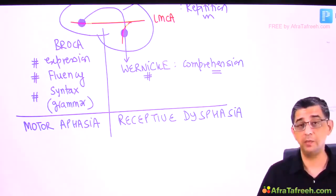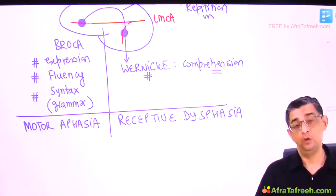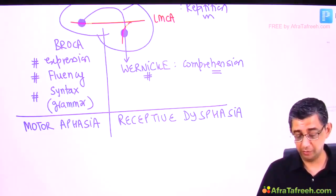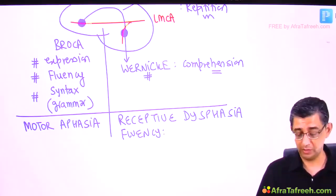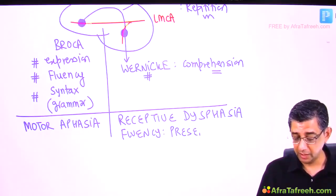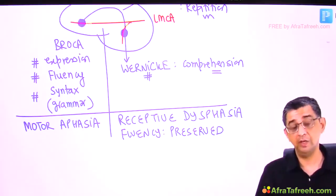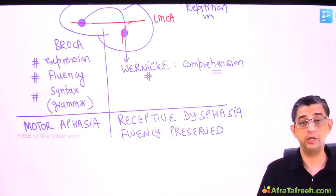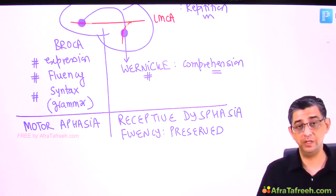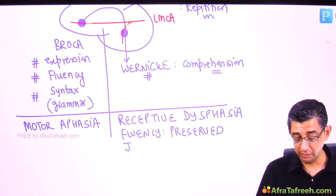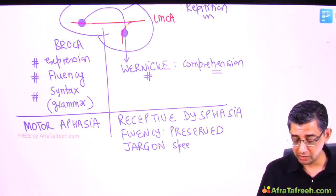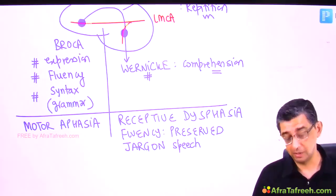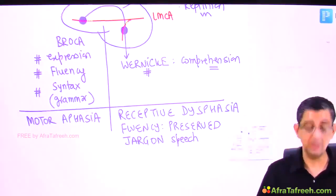In receptive aphasia, if only Wernicke's area is damaged, fluency is still preserved because fluency is a function of Broca's area. Whatever comes to this patient's mind he will continue to speak — random words like 'dog, chicken, Pakistan' — that make no sense. We call this jargon speech.